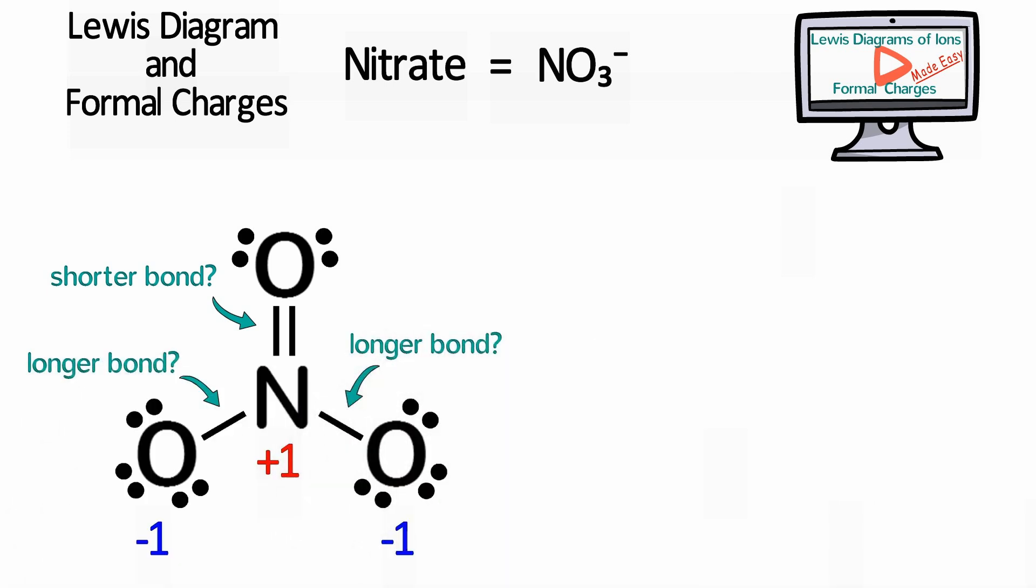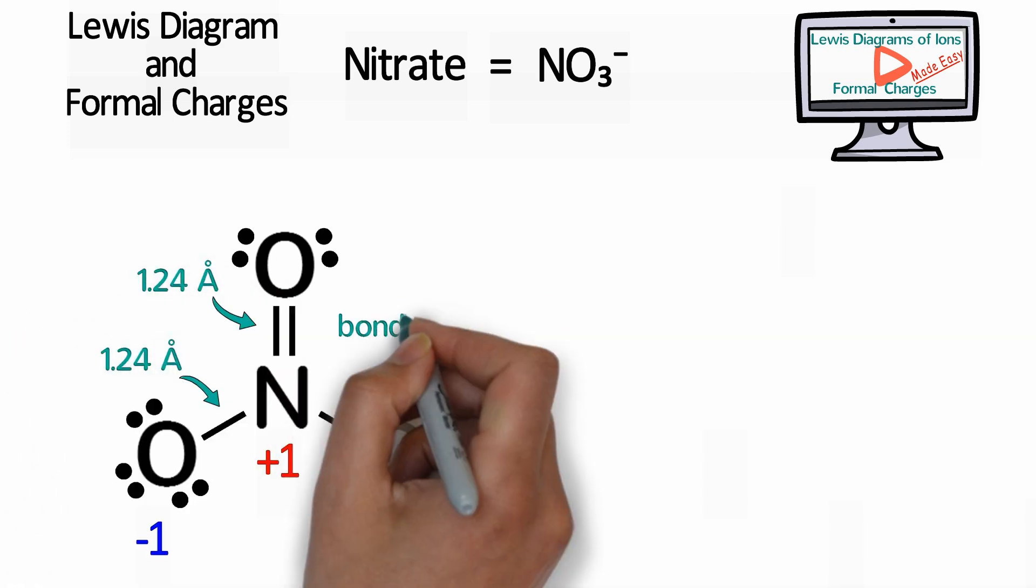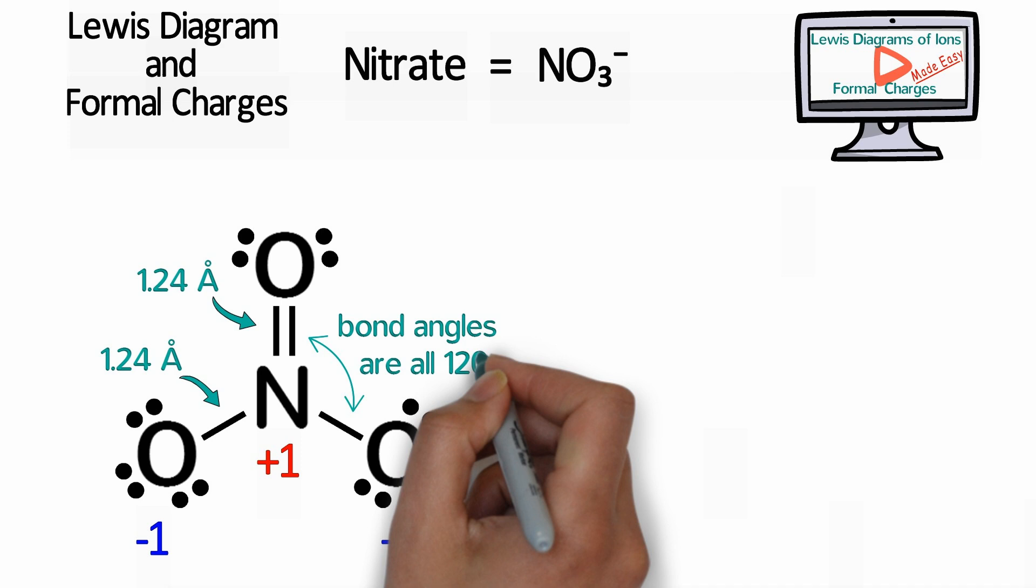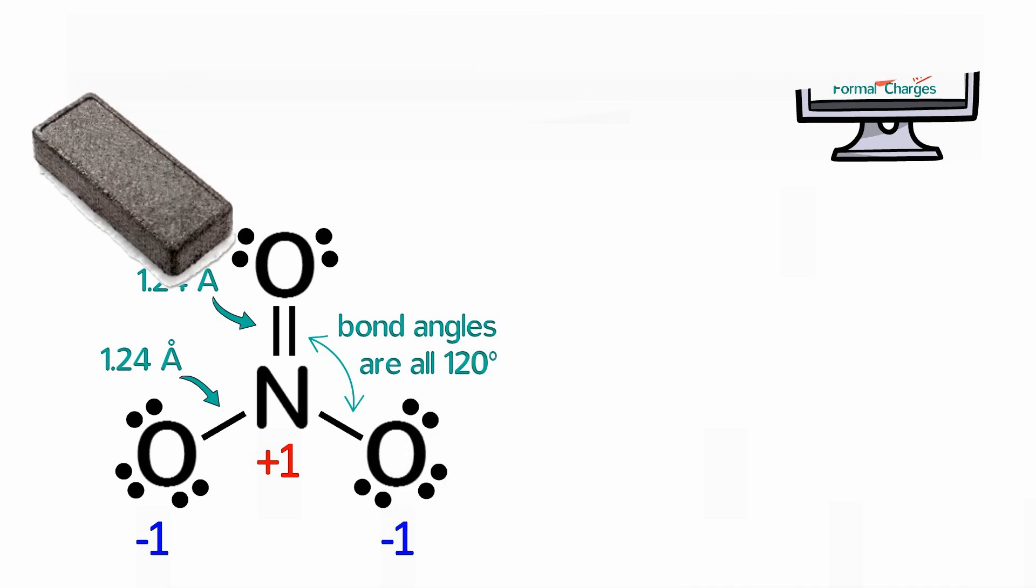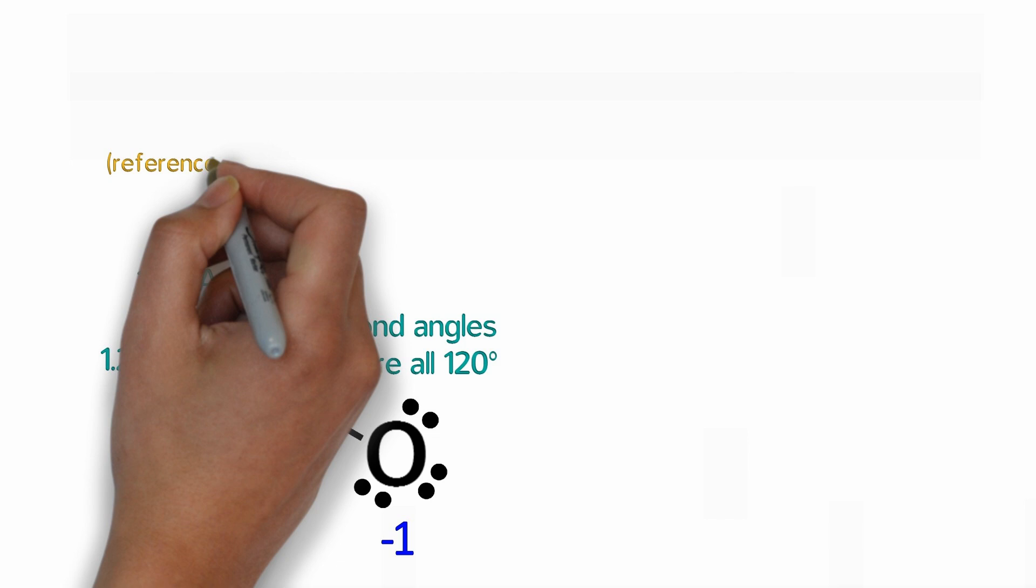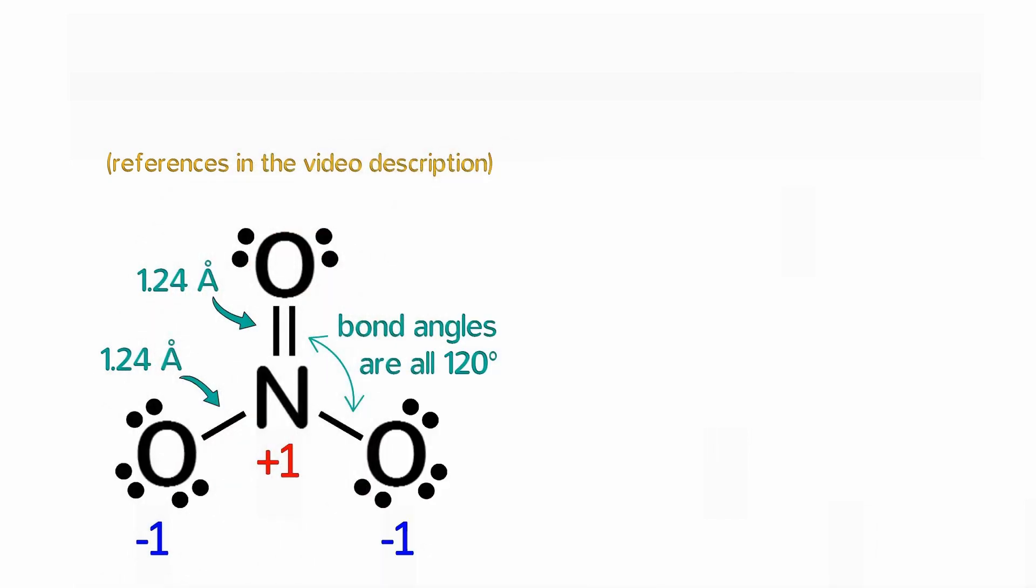We would also expect two different bond angles and a significant dipole moment. However, x-ray structures reveal that the nitrogen-oxygen bonds are all equivalent. They are 1.24 angstroms long and the bond angles are exactly 120 degrees, forming a perfect trigonal planar structure that is non-polar. By the way, the references for all of my data can be found in the description of this video. Feel free to check it out.